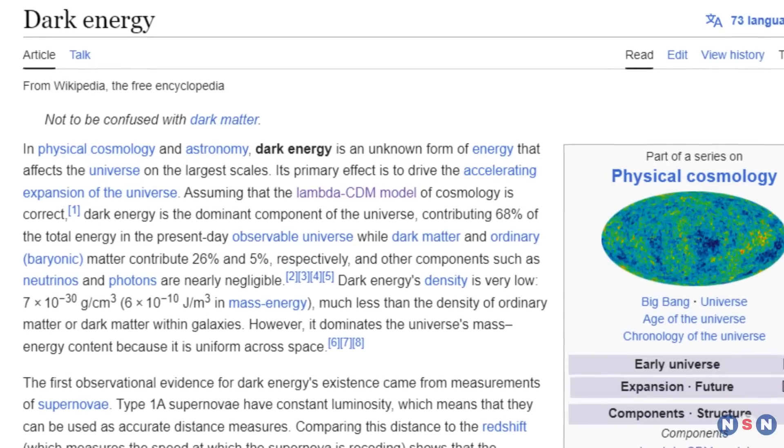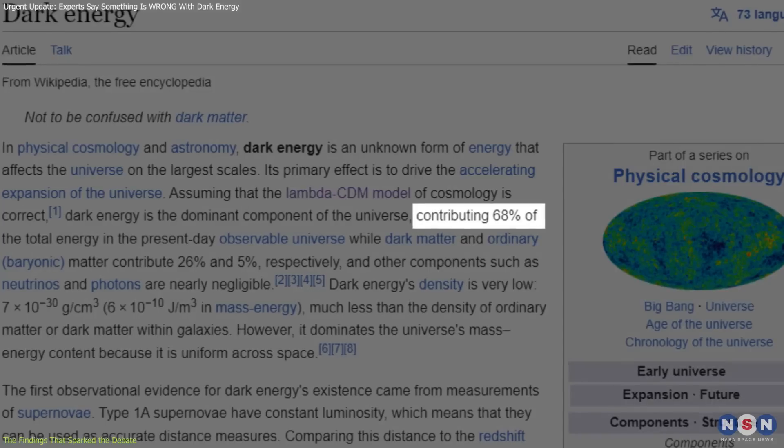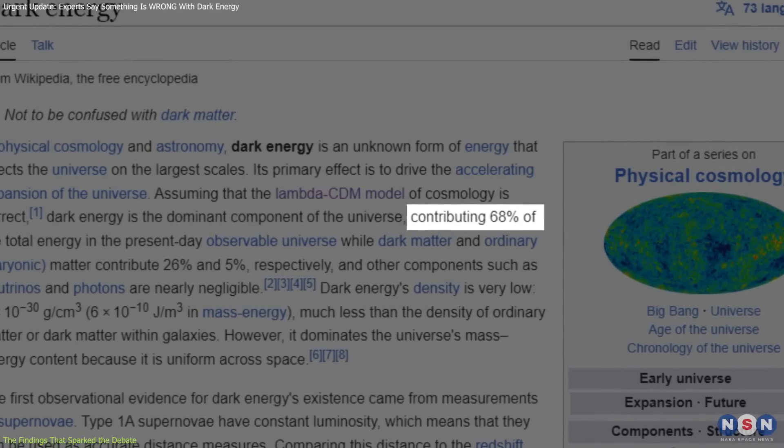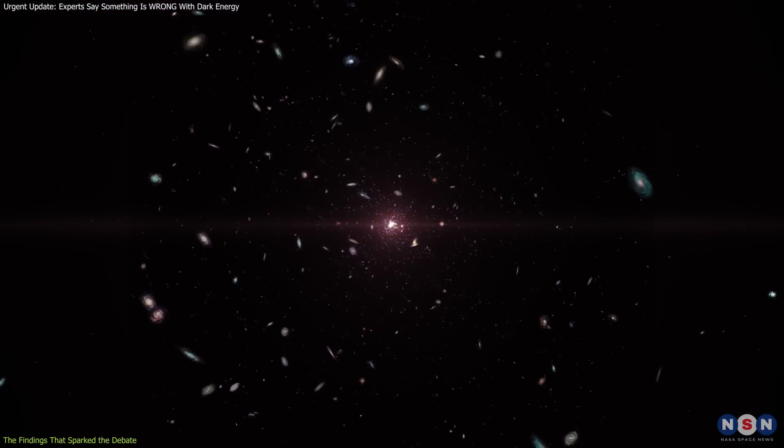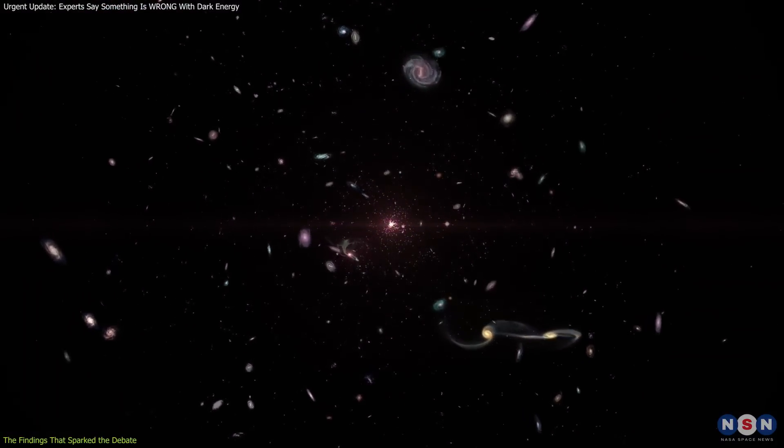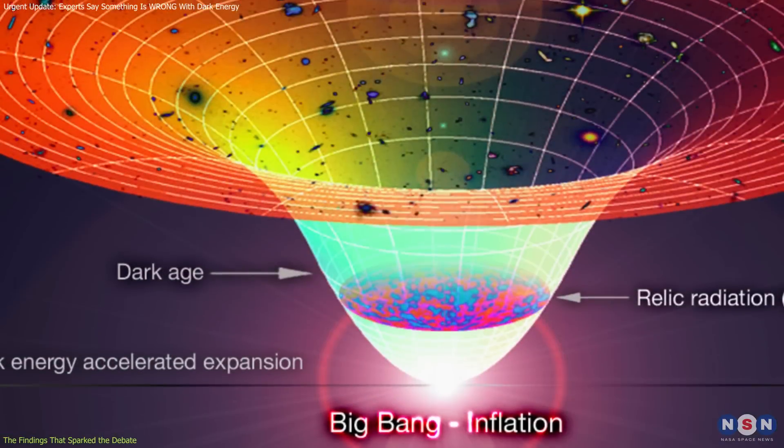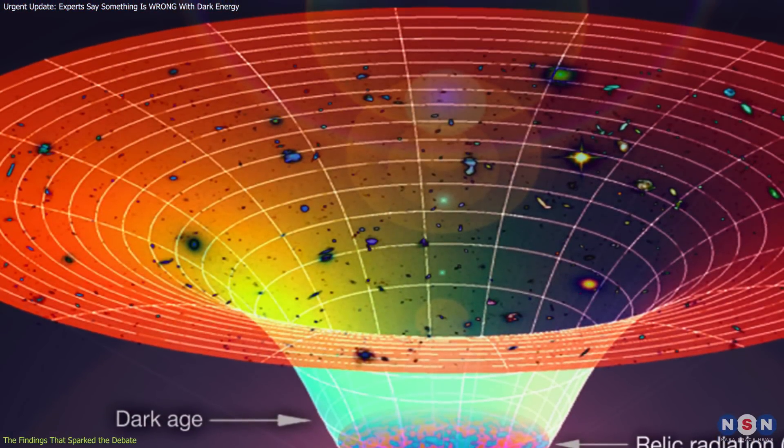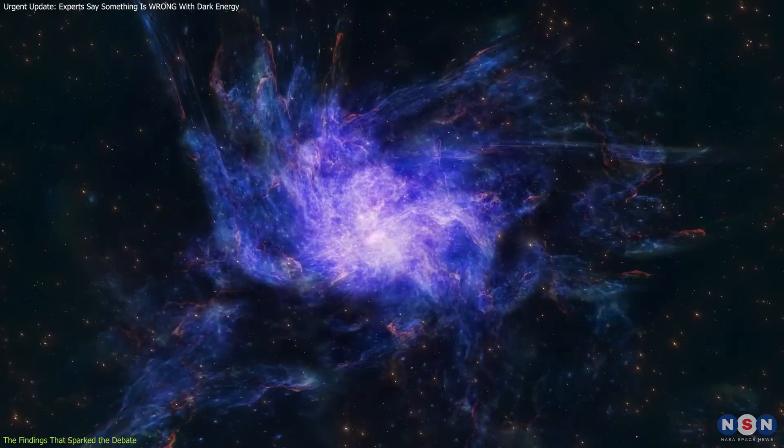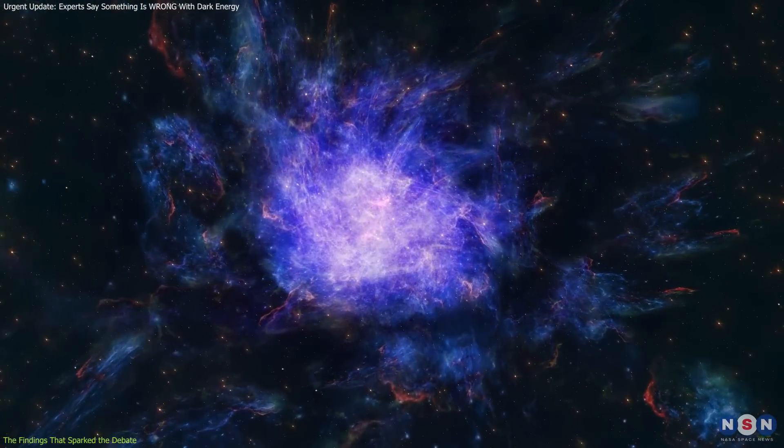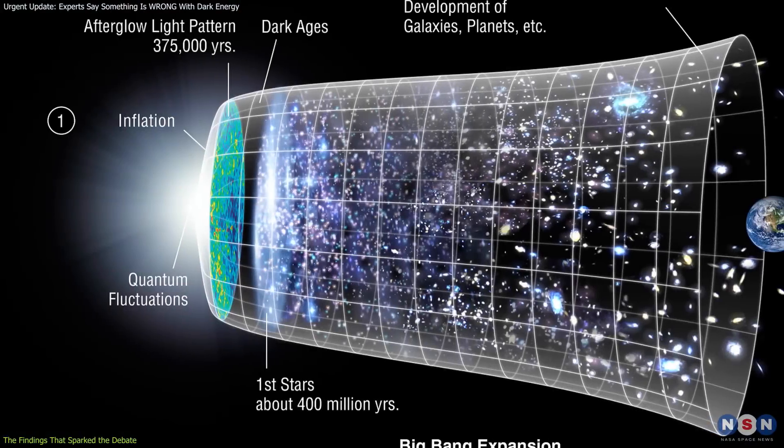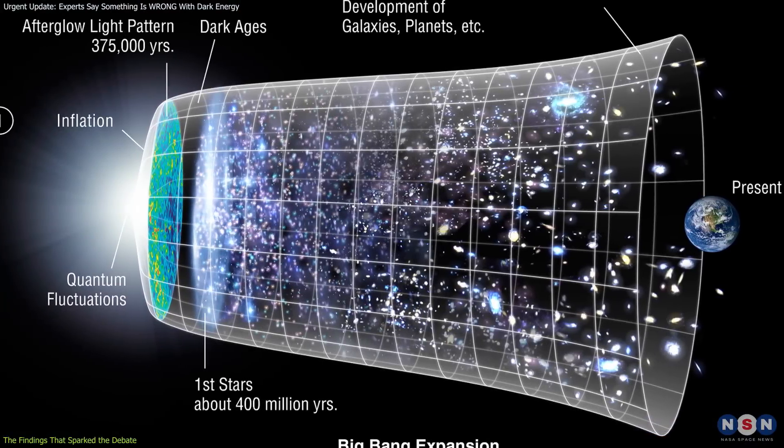For over two decades, scientists have believed that dark energy accounts for approximately 68% of the universe. This idea took hold after 1998 when researchers discovered that the universe wasn't just expanding, it was doing so at an accelerating rate. It seemed like a cosmic repulsive force was acting on galaxies, driving them farther apart. This mysterious force, dubbed dark energy, was thought to be a constant element in the universe, a keystone of the Lambda CDM model of cosmology.